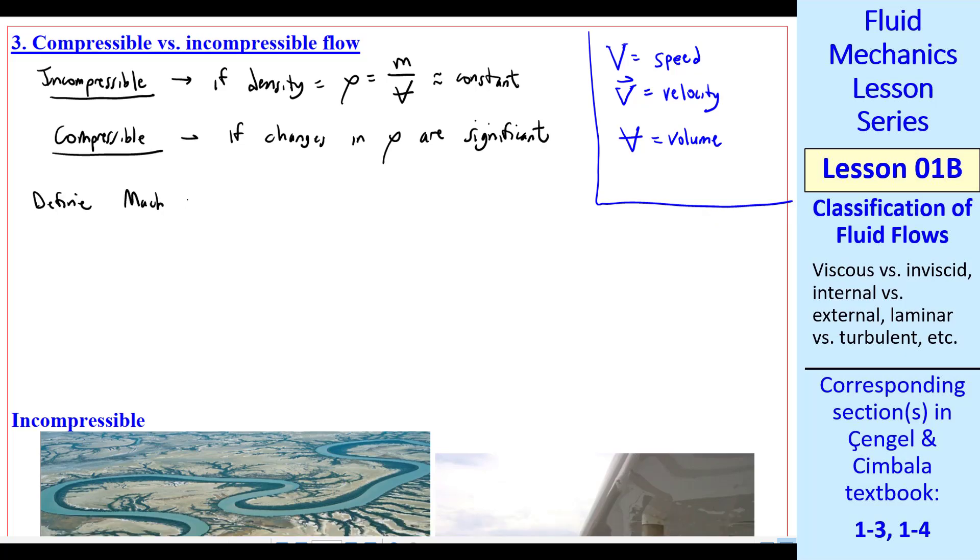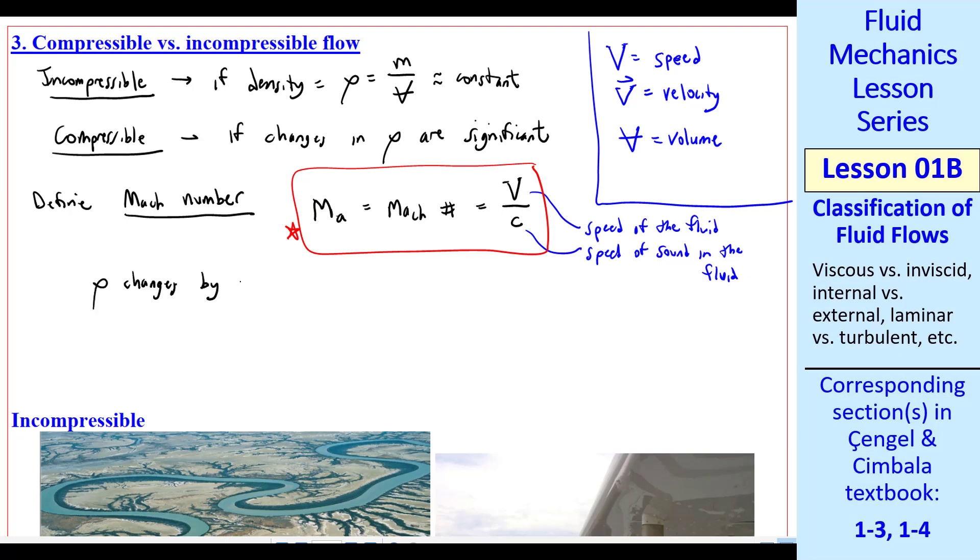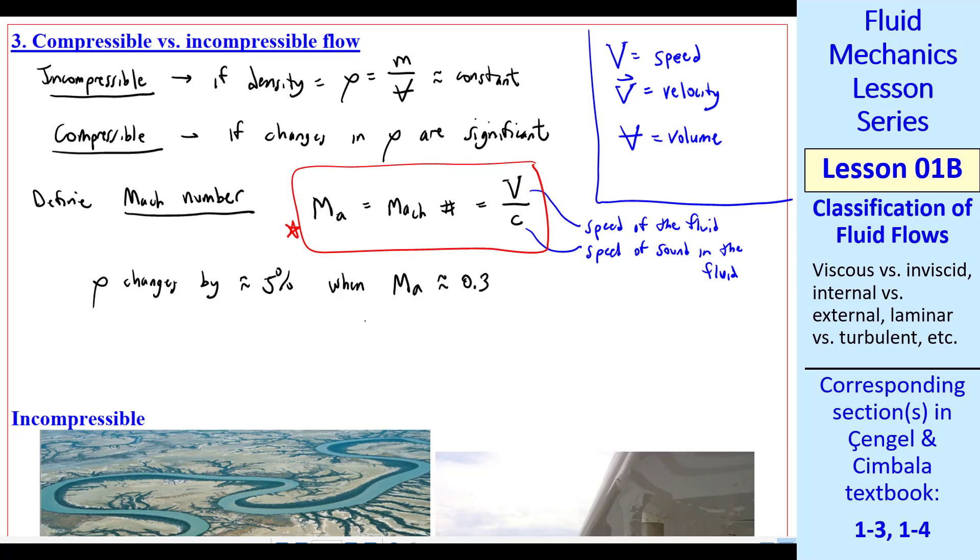Let's define a very important parameter in fluid flow called the Mach number, M-A. Some textbooks just use M. We use M-A in the Cheng-Gao Simbala fluid book. This is a non-dimensional parameter equal to the speed over the speed of sound. So V is the speed of the fluid itself, and C is the speed of sound in that fluid. Mach number is important to decide whether the flow is compressible or whether we can approximate it as incompressible. A good rule of thumb is that rho changes by about 5% when the Mach number is about 0.3. So we can say that if the Mach number is less than about 0.3, we approximate the flow as incompressible. So that's a good rule of thumb to remember.